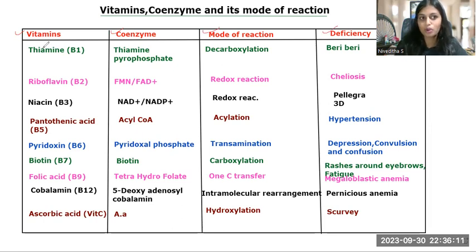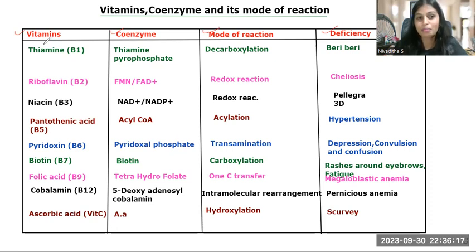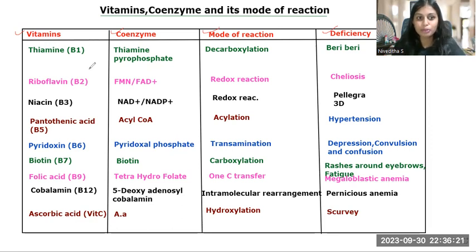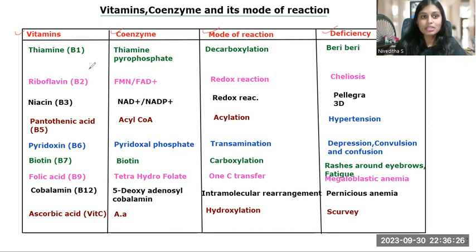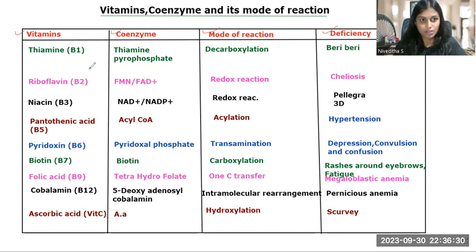In vitamins, vitamin B complex is there. In the B complex, there are many vitamins: B1, B2, B3, B5, B6, B9, B12. Every vitamin has its own coenzyme, mode of reaction, as well as deficiency.